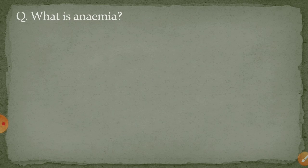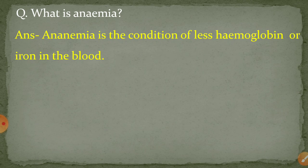Next question: what is anemia? Anemia is the condition of less hemoglobin and iron in the blood. Anemia ek aisi condition hai jismein aapke body mein hemoglobin kam ho jaata hai aur blood ka iron bhi kam ho jaata hai.